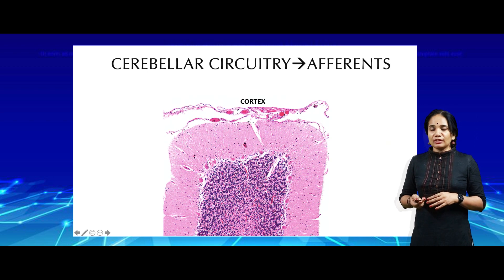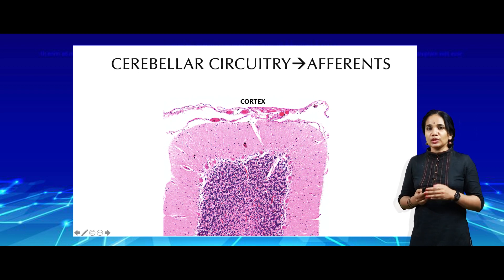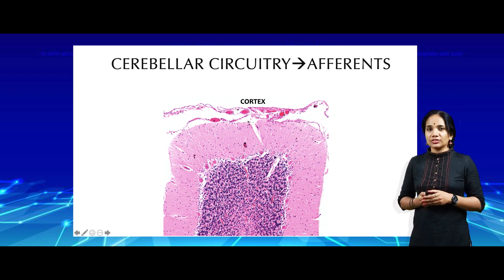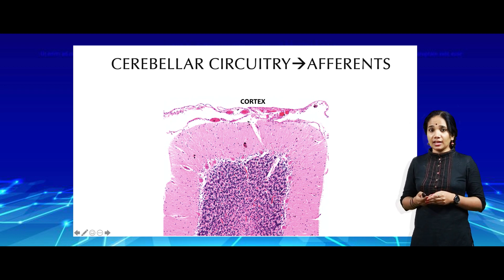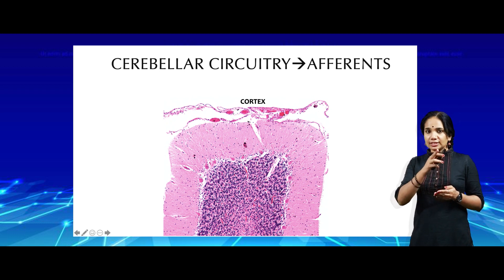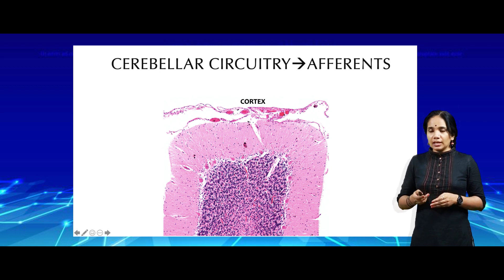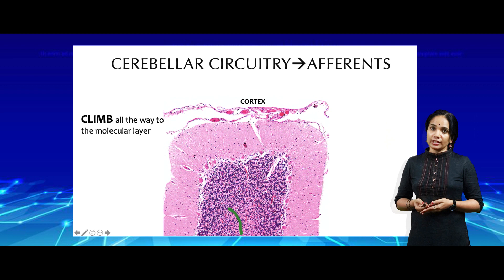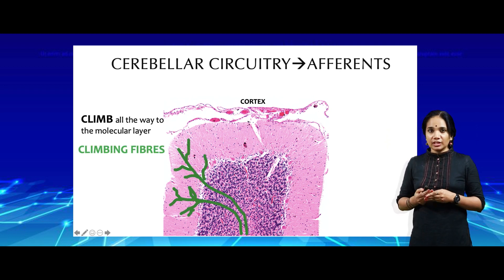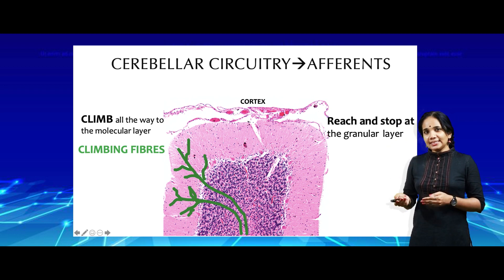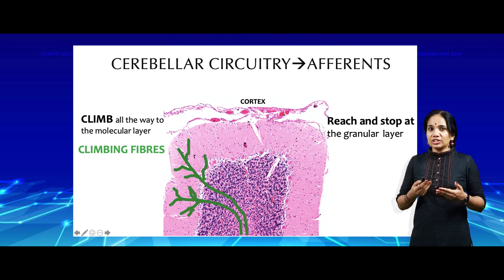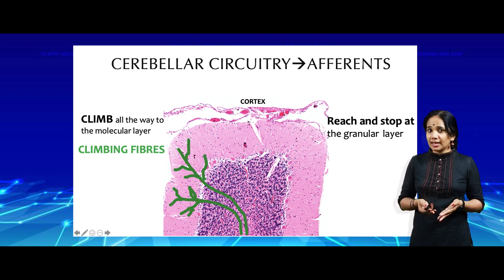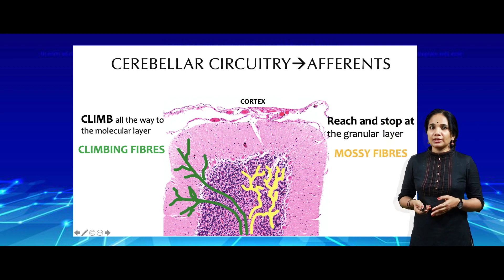Before going into the circuitry in detail, let's revise. In a histological section of the cerebellum, we can see the three layers of the cortex: an outer molecular layer and an inner granular layer, with the large basket-shaped Purkinje cells in between. Afferents coming into the cerebellum are mainly of two types. The first set climb all the way to the molecular layer — very similar to vines climbing up a tree — and hence are called climbing fibers. The next set divide and re-divide in the granular layer, stopping there and giving all their synapses within it; because of their widespread action these are called mossy fibers.